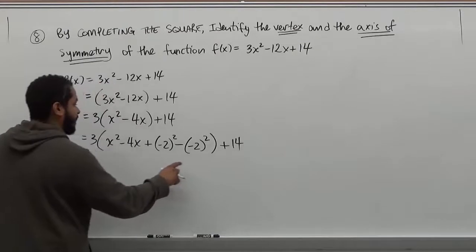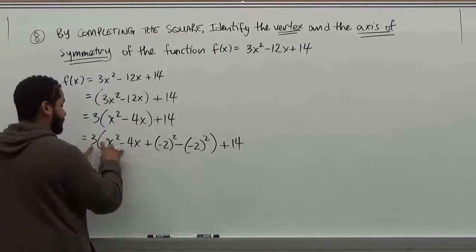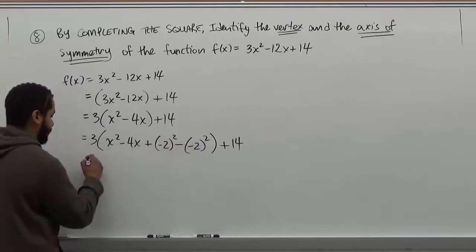So we're going to factor out this negative. And when we factor this out, we're going to multiply by the 3 that's outside. Because this is not without being multiplied with 3.